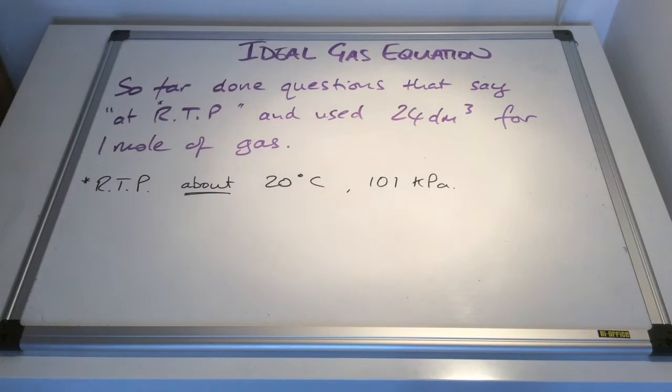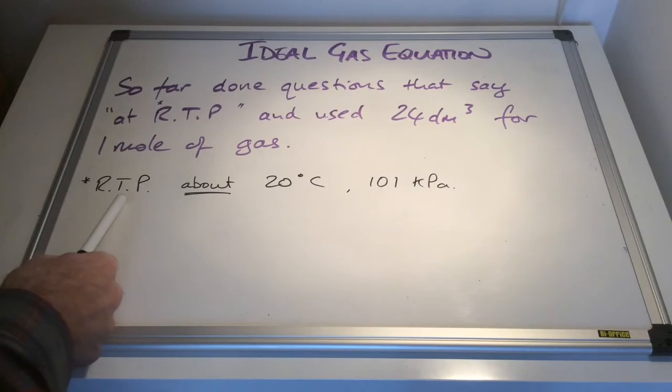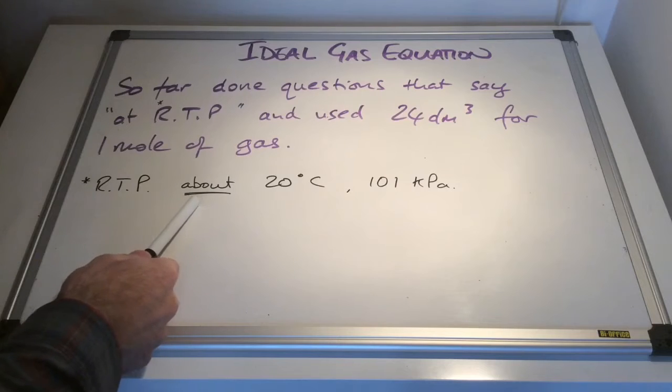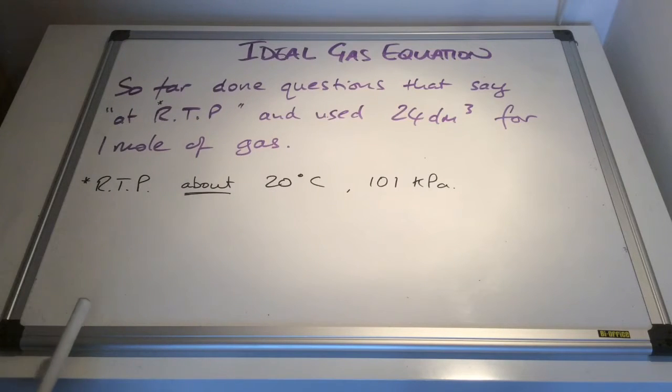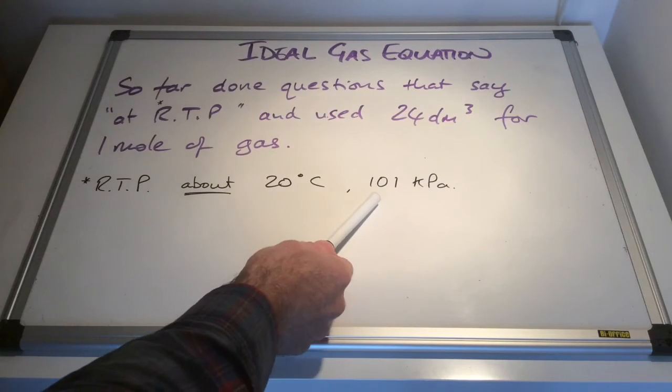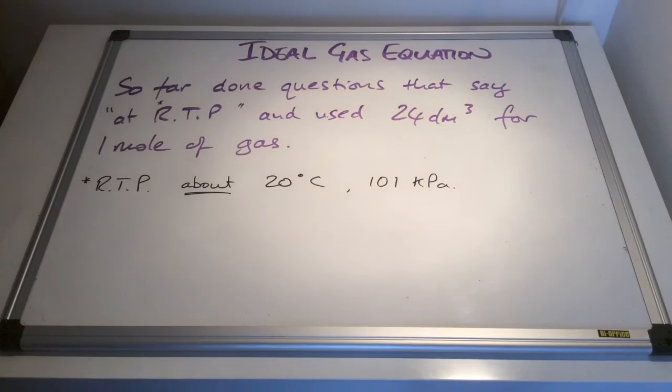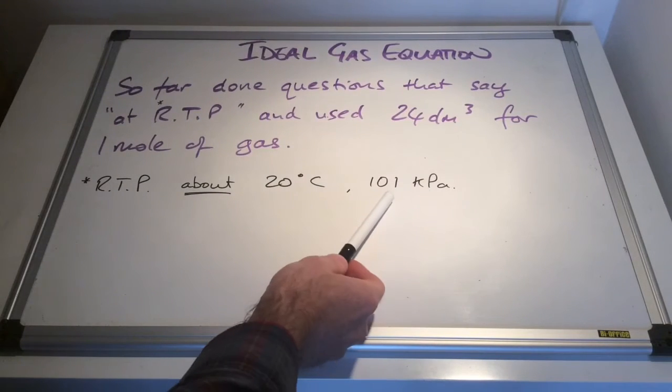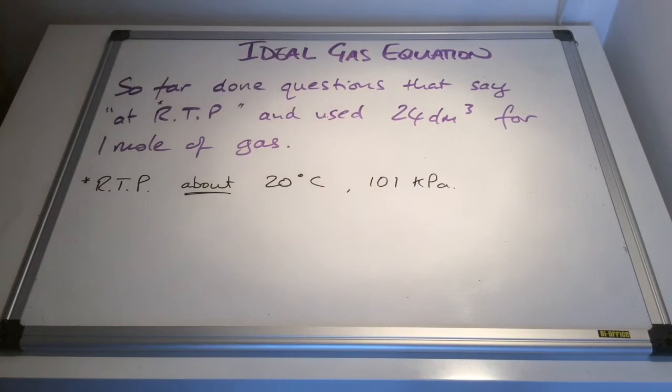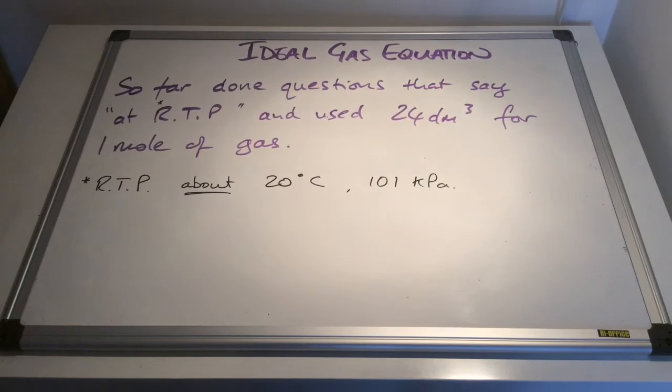You can see in black there I've said RTP is about 20 degrees C, it's about 101 kPa. In other words, it's not that accurate. So what if the temperature was 18 degrees C in the lab that you were doing the experiment? What if the pressure was slightly higher than 101 kPa? Obviously the volume is going to change and therefore we need a more accurate equation.